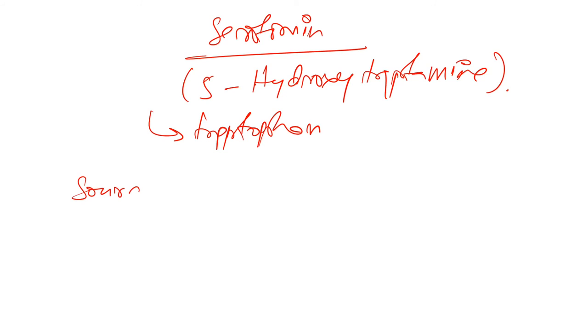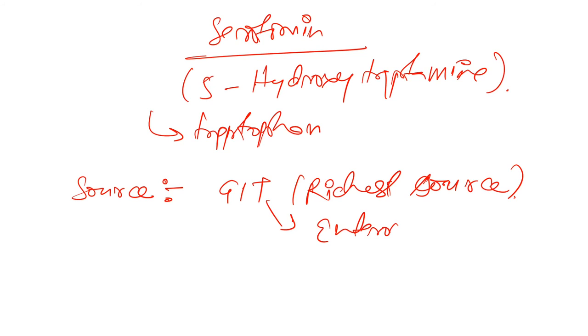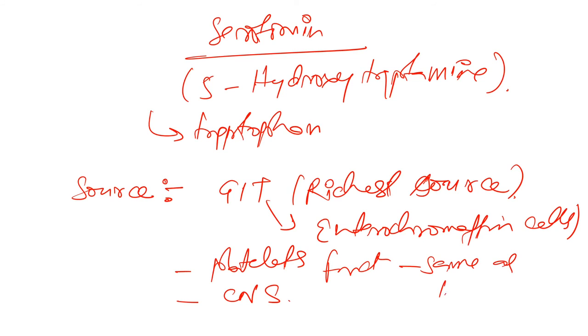Now source. Sources of serotonin. Number 1 is GIT. GIT is the richest source. In GIT, which part is the richest source of serotonin? That is enterochromaffin cells. Next is after GIT we have platelets and then we have got CNS. CNS also contains serotonin. Now what are the functions? Functions of serotonin? It is same as histamine.